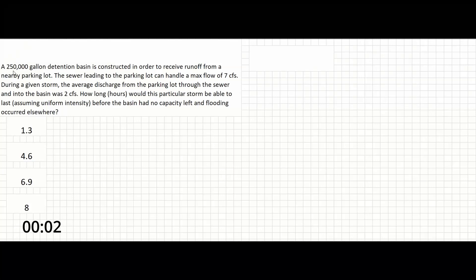Okay, in this problem, a 250,000-gallon detention basin is constructed in order to receive runoff from a nearby parking lot. The sewer leading to the parking lot can handle a max flow of 7 cubic feet per second. During a given storm, the average discharge from the parking lot through the sewer and into the basin was 2 cubic feet per second. How long, in hours, would this particular storm be able to last, assuming a uniform intensity, before the basin had no capacity left and flooding occurred elsewhere?